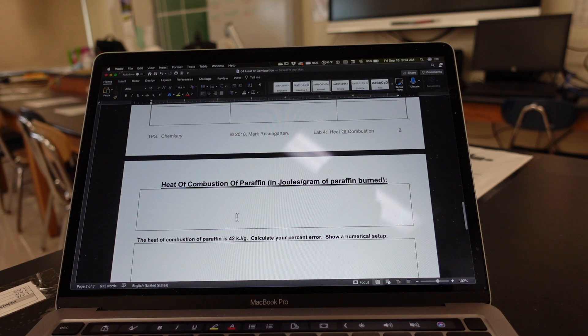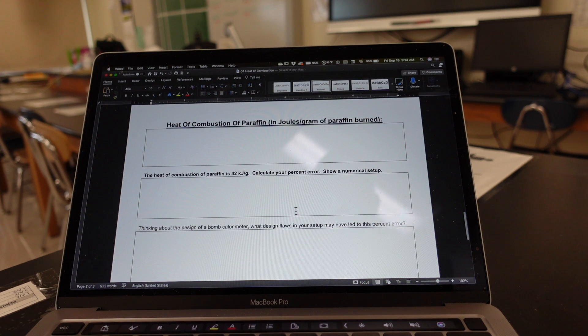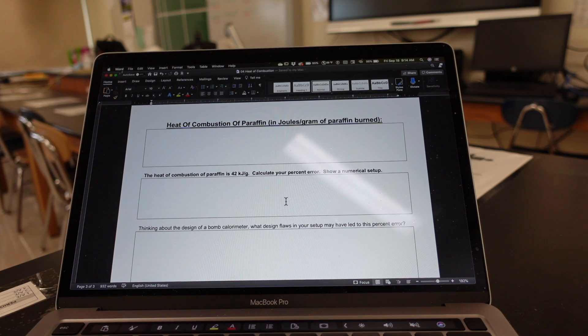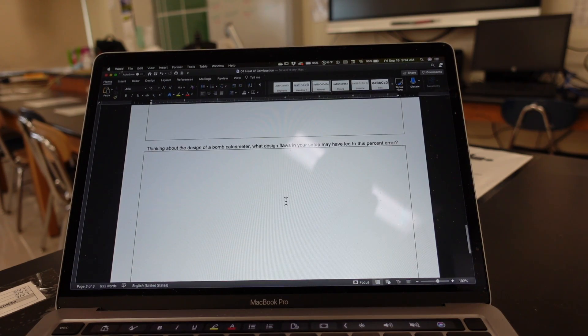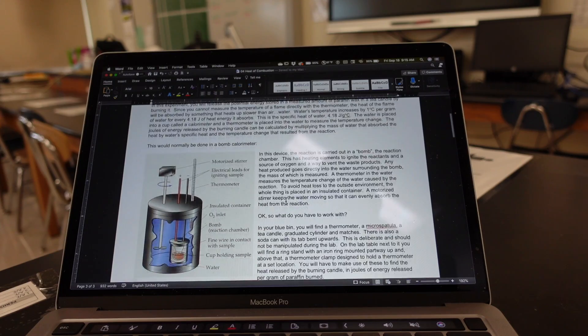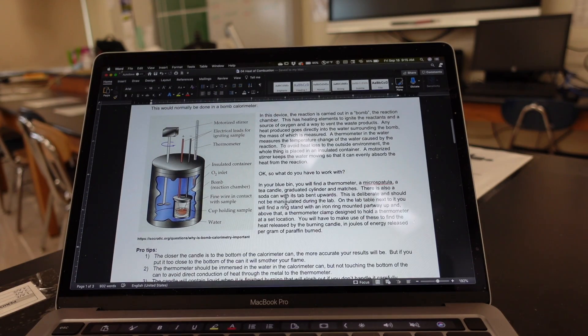Then, what is the heat of combustion in joules per gram? This is the accepted value for heat of combustion. Calculate your percent error and, thinking about the design of a bomb calorimeter, which you will find on the first page—the bomb calorimeter.